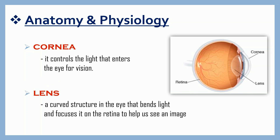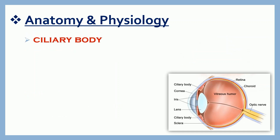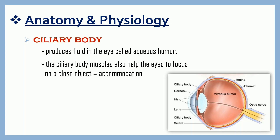Lens. The lens is a curved structure in the eye that bends light and focuses it on the retina to help us see an image clearly. Ciliary body. The ciliary body produces fluid in the eye called aqueous humor. It flows between the lens and the cornea and provides nutrients. The ciliary body muscles also help the eyes focus on a close object. This process is called accommodation.